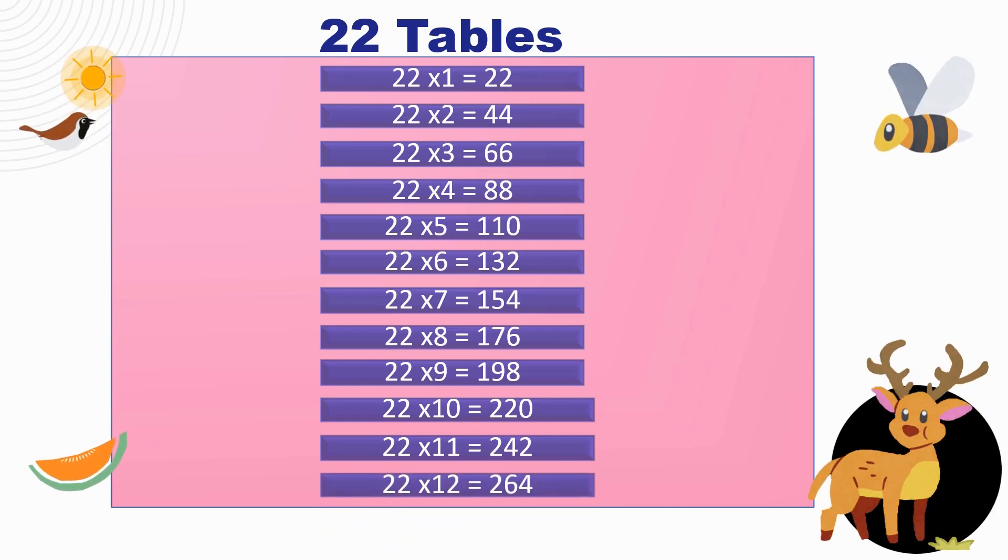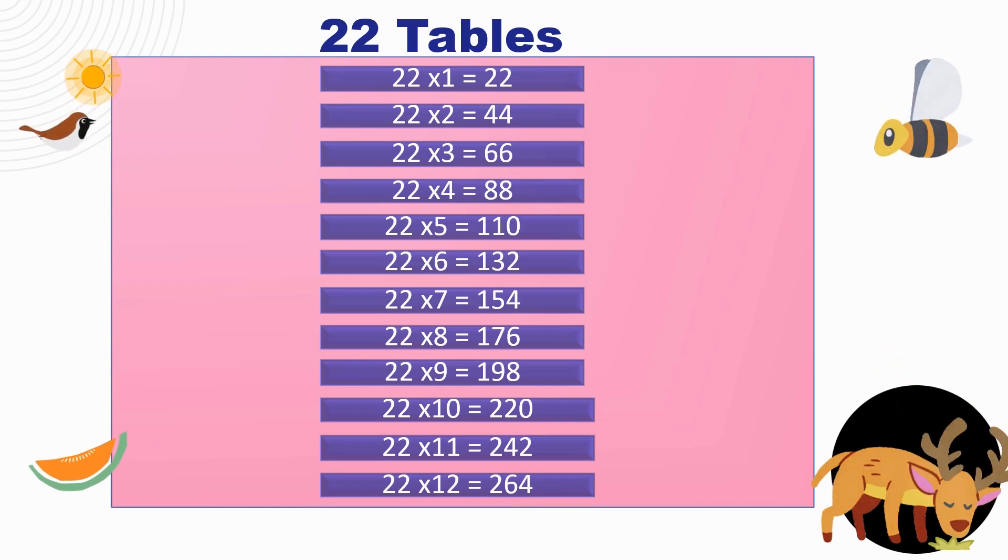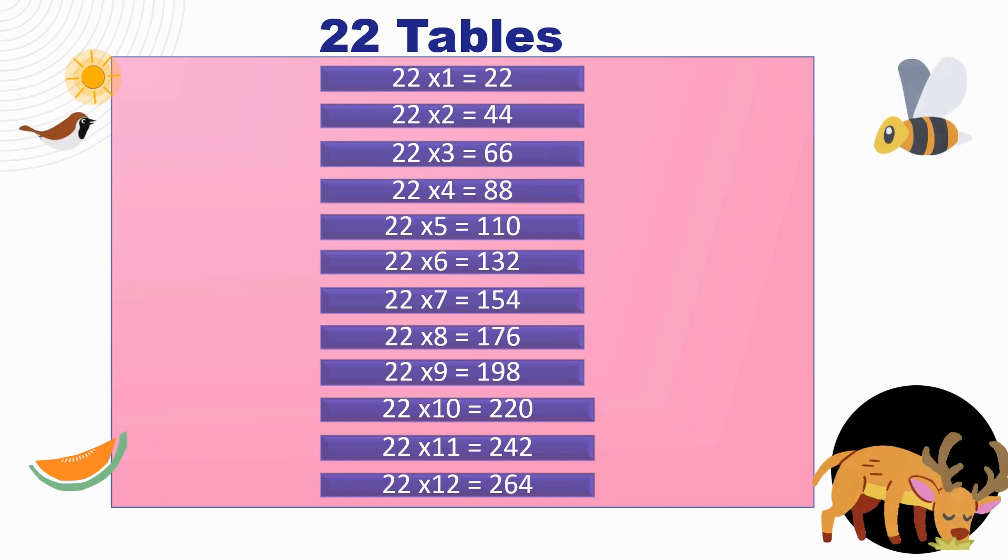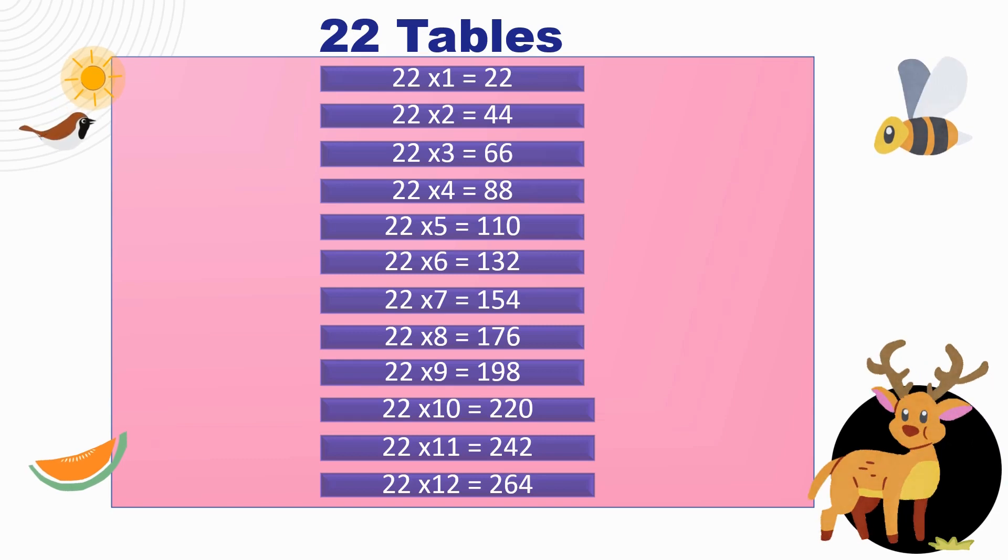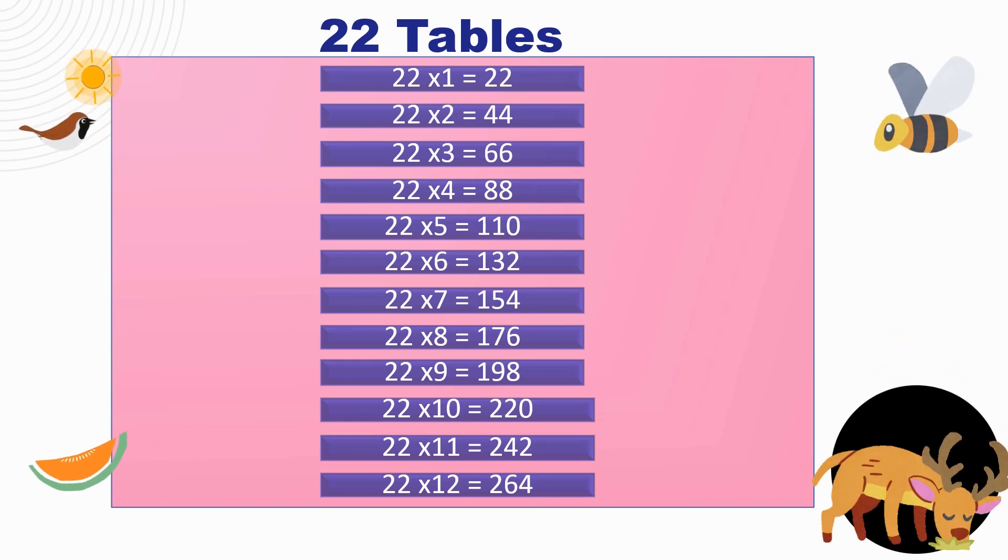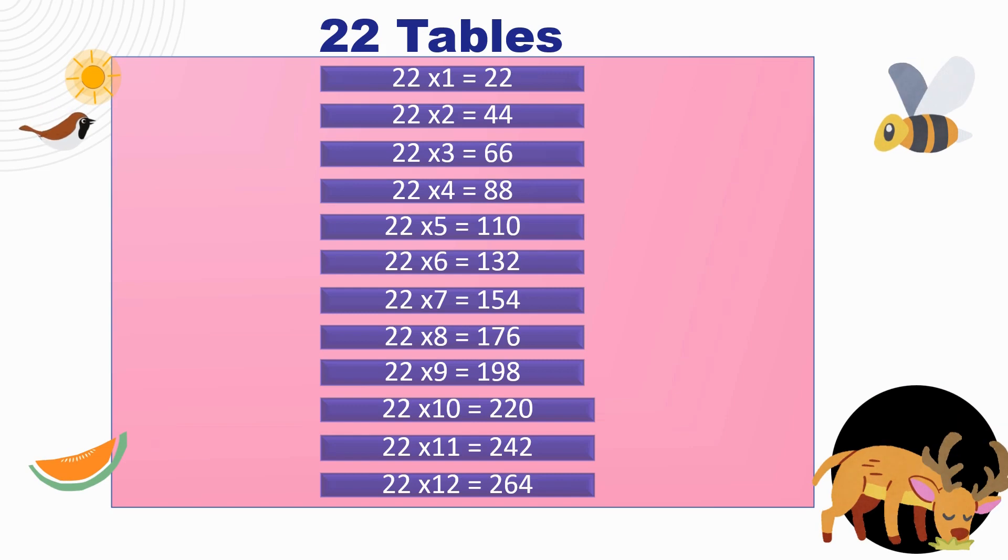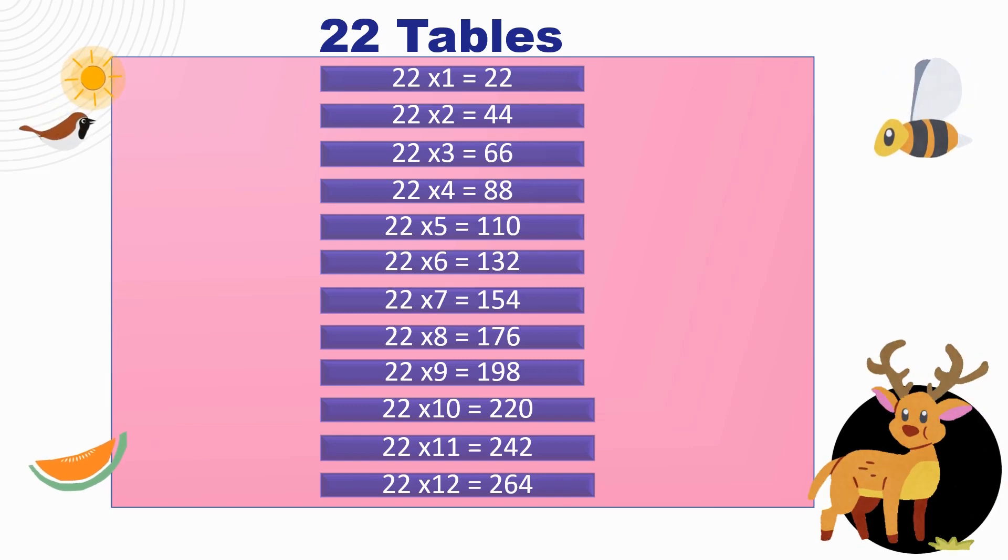22 times 7 is 154, with every number open a new door. 22 times 8 is 176, numbered bricks in our mathematical tricks. 22 times 9 is 198, almost 200 isn't it great. 22 times 10 is 220, with these tables our arsenal is plenty.